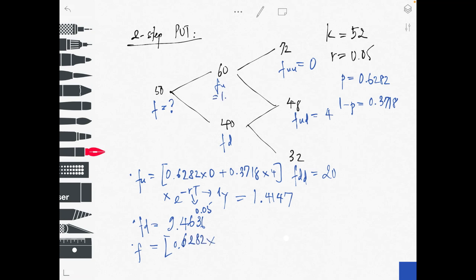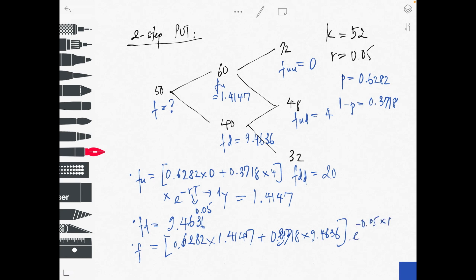For f_d, applying the same formula: 0.6282 times f_ud (which feeds into 1.4147) plus 0.3718 times 9.4636, discounted back to present. This gives f_d equals 9.4636. Finally, f equals 0.6282 times 1.4147 plus 0.3718 times 9.4636, discounted to present, which equals 4.1923.